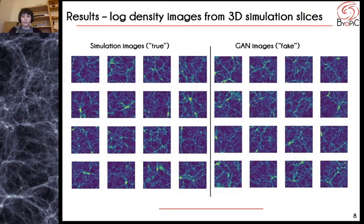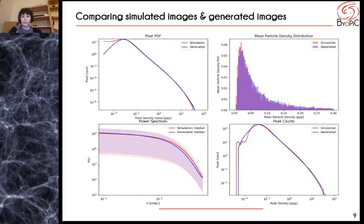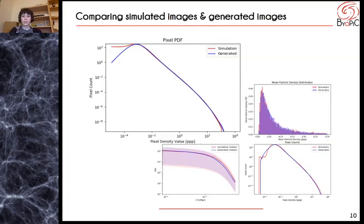Now onto the results. We compare a set of true simulation images with a set of images generated by the GAN. Visual inspection shows that our GAN generates very convincing images — they're hard to tell apart by eye from the true images, and they reproduce features such as filaments and halos very well. To further confirm this, we compare the two sets using a series of statistical estimators. First, the pixel PDFs, to make sure that the density distribution in the images is, on average, well recovered. We can see this is the case, with the two curves overlapping almost perfectly except at low densities, due to the log transformation mentioned above.